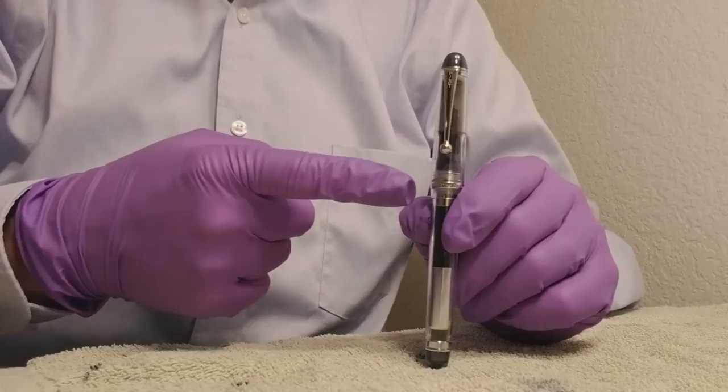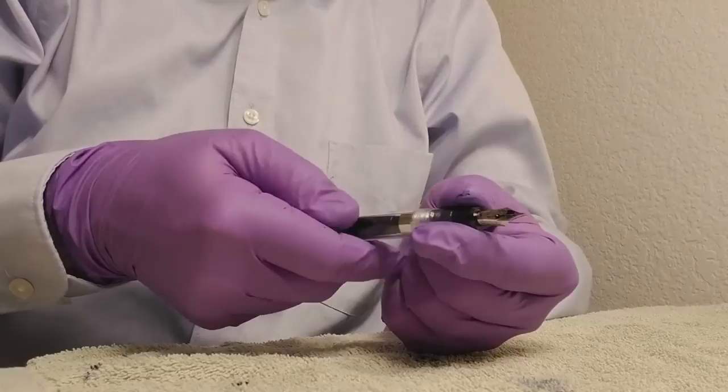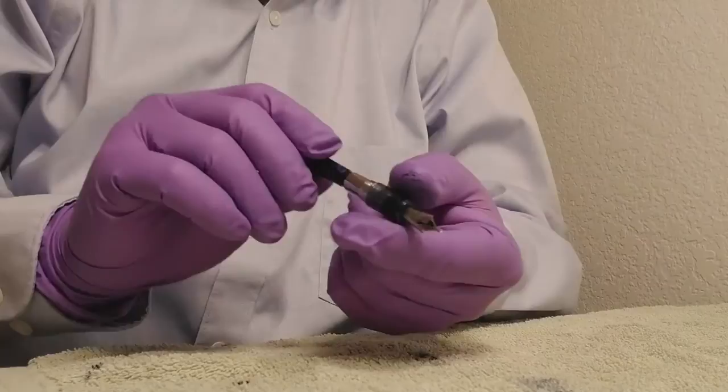This is the Pilot Custom 74 Demonstrator Fountain Pen, fully assembled. Let's disassemble it. When I remove the barrel from the section, I like to post the cap because the clip will prevent the barrel from rolling off the table.